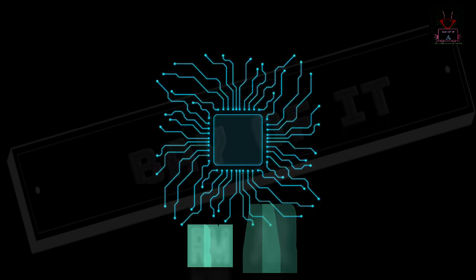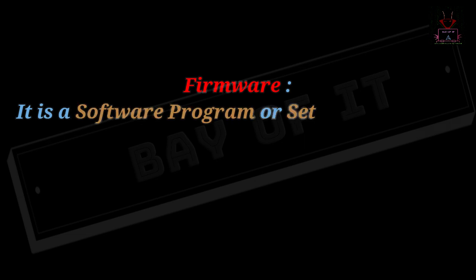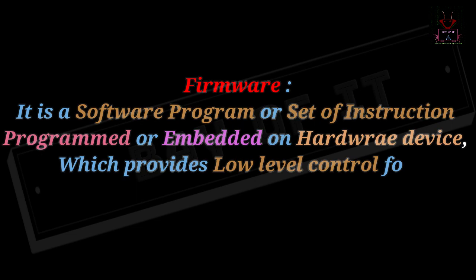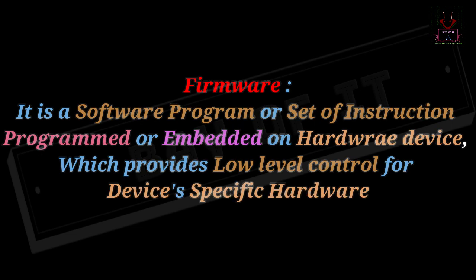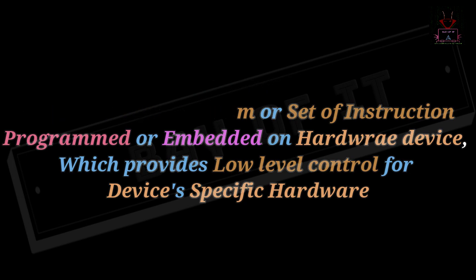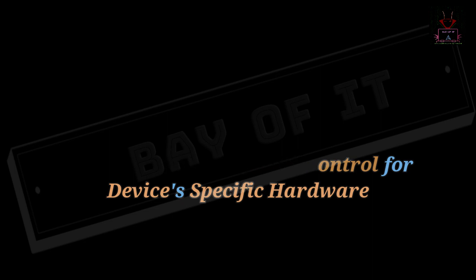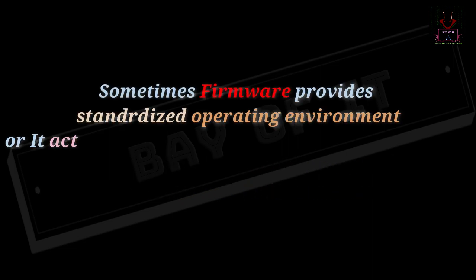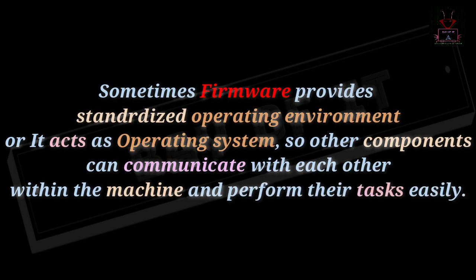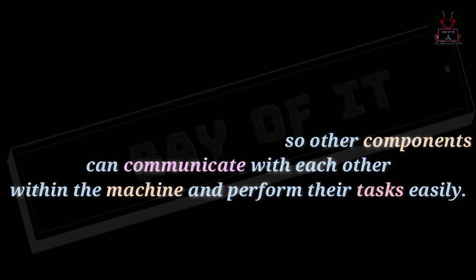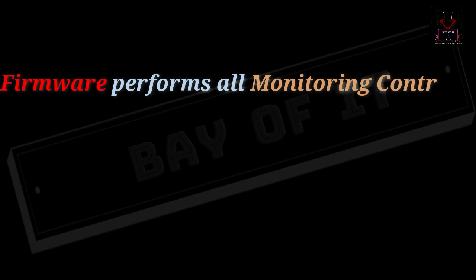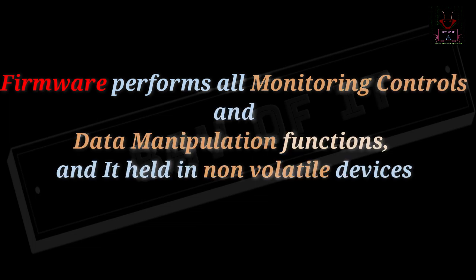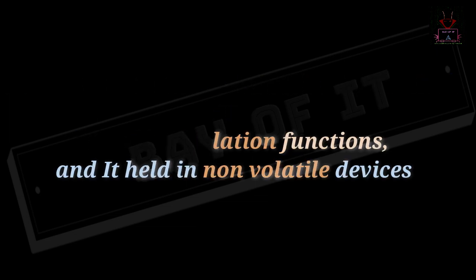Firmware is a software program, or set of instructions, programmed or embedded on a hardware device. It is a specific class of computer software that provides low-level control for a device's specific hardware. It can either provide a standardized operating environment, or act as the device's complete operating system, performing all control, monitoring, and data manipulation functions.